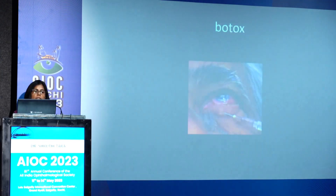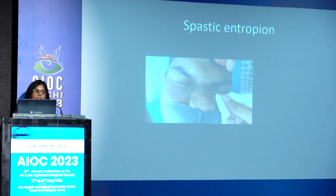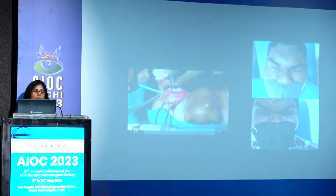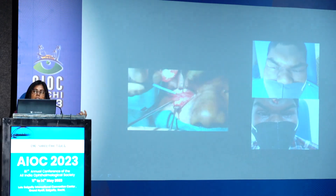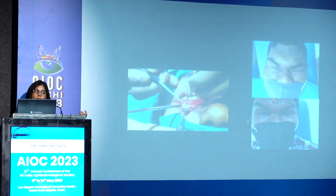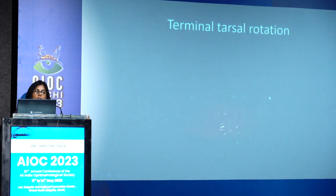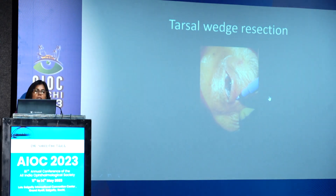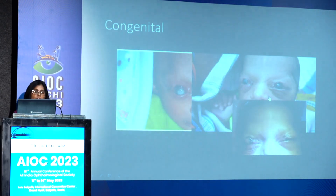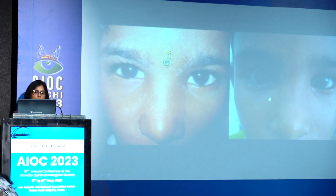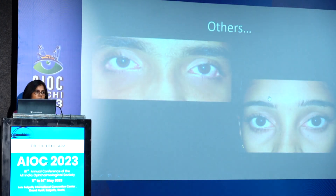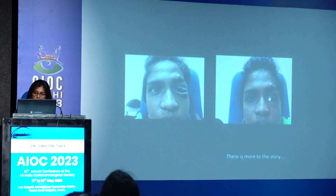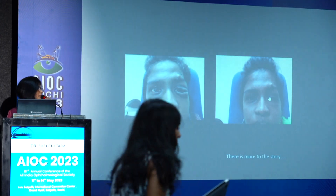There is a lot we can do with Botox. For spastic entropion, remove the preseptal portion of the orbicularis. Terminal tarsal rotation works well for the posterior lamella issue; for cicatricial entropion, tarsal wedge resection is good. For congenital entropion and epiblepharon, the modified HOTS procedure can be used. Symblepharon and centurion syndrome have management approaches as well. There is a lot more to this story but in the interest of time we will move on.